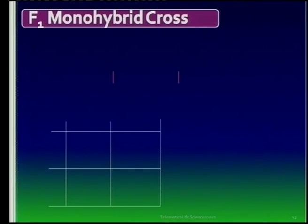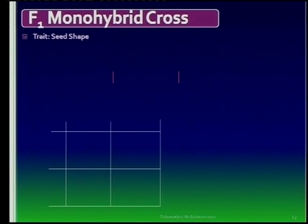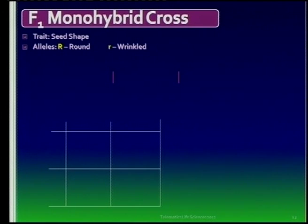First of all, we work with certain traits or characteristics. In this instance, I'm going to use an example: the shape of seeds. The alleles that we're going to use is a capital R for round seeds and a small r for wrinkled seeds. This shows us immediately what you have to know — whenever you see the capital R, it shows that it is the dominant allele.